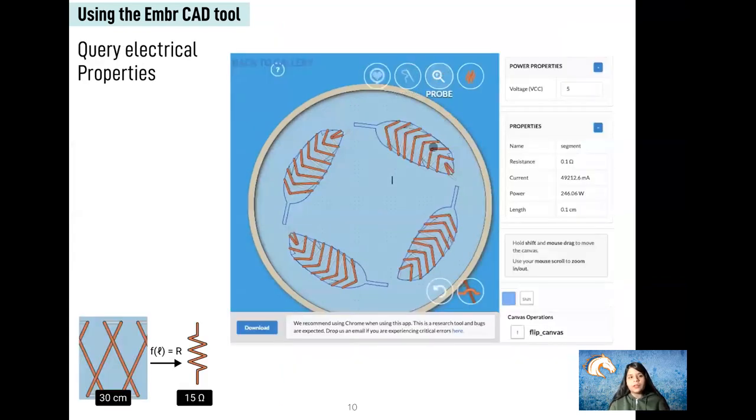The electrical model is used to query the electrical properties such as resistance and power of the embroidered stitches so that the user can make any changes necessary.